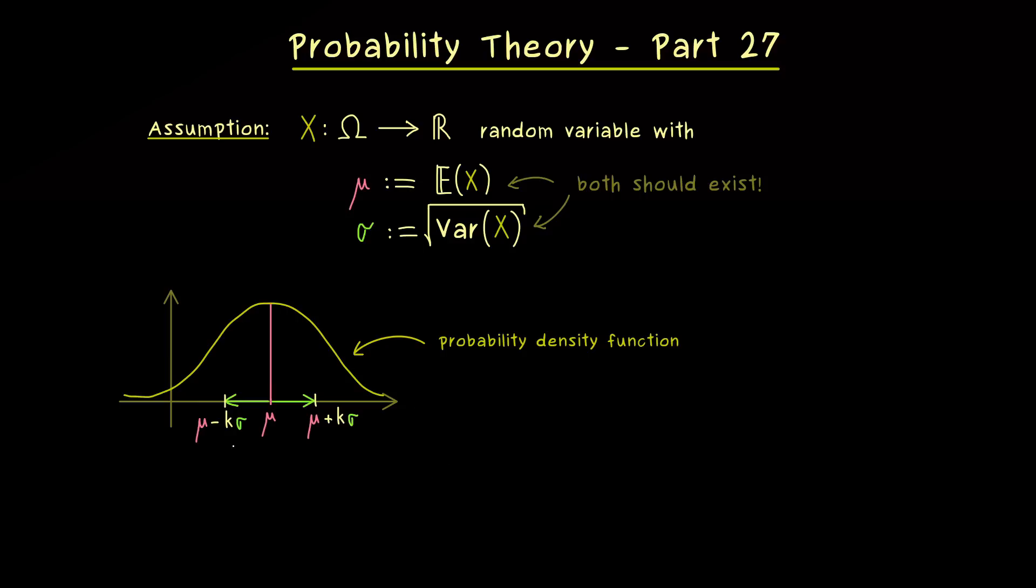And then we can go with k through the natural numbers. So we have k equals 1, k equals 2 and so on. In fact for reasons we will discuss soon, the most popular case is k equals 3. However, no matter which interval we choose here, the common question is always what is the probability to lie inside this interval. Hence in the case of a probability density function, the question is what is the ratio of this area here to the whole area. You might already see that we can estimate that in the general case by using Chebyshev's inequality.